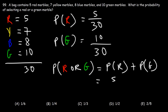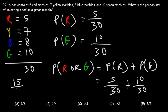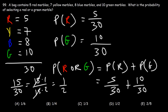This is simply the sum of the probability of selecting a red marble and a green marble. So this is going to be 5 over 30 plus 10 over 30, which is 15 over 30. We can write 30 as 15 times 2, and canceling the 15, the probability of getting a red or a green marble is 1 half. So D is the right answer.